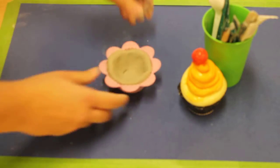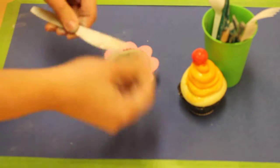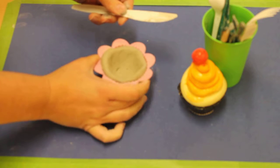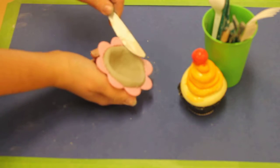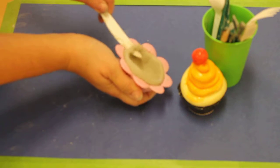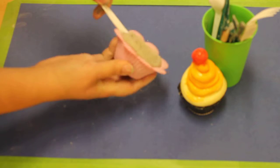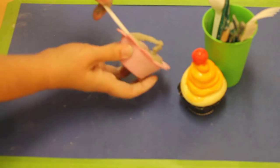Alright, so that looks pretty good to me. I'm going to take a regular old butter knife, a plastic butter knife, and I am going to saw away anything that was sticking over the top.